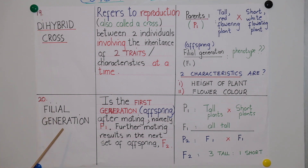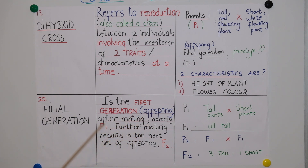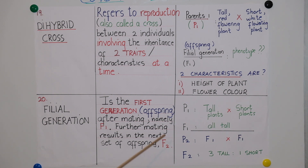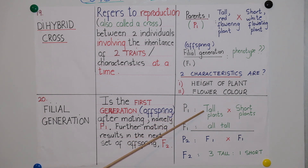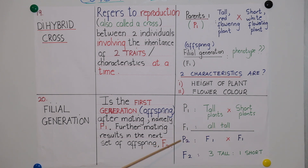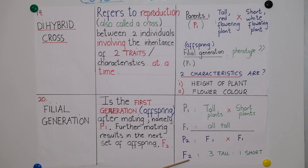When doing monohybrid and dihybrid crosses, you will come across the term filial generation. It is the first generation or offspring after mating, namely F1, which is the first filial generation. Further mating results in the next set of offspring called the F2, or second filial generation. In the first genetic cross, P1 represents the first set of parents, and F1 represents their offspring. If these F1 offspring are then cross-pollinated with each other, they become P2, and their offspring are called the F2 — the second filial generation.